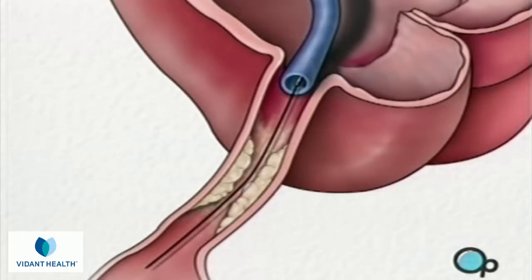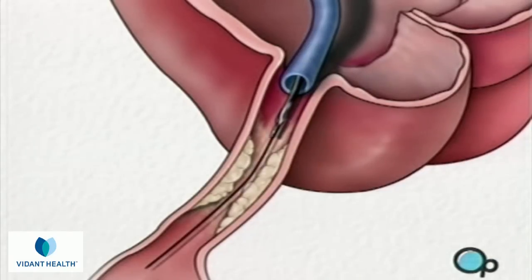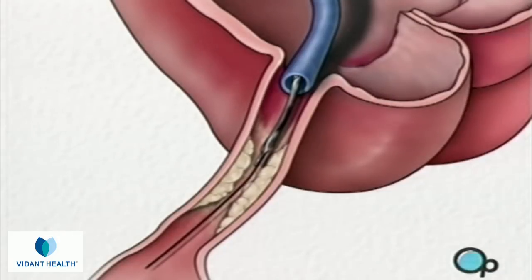This wire acts as a guide for the balloon catheter. It allows your doctor to position the deflated balloon precisely in the middle of the narrowest part of the coronary artery.